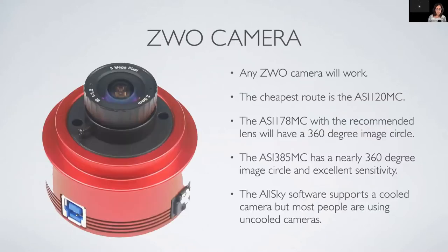You're going to need a ZWO camera. The AllSky software will work with the Raspberry Pi camera, but the ZWO camera will give you a better picture. The absolute cheapest ZWO route is the ASI-120MC, but you can get better pictures with other cameras. The 178MC will give you a complete 360-degree image circle with a different lens. I'm using the 385MC, which has almost a 360-degree image circle and really good sensitivity. The AllSky software even supports cooled cameras, but most people are using uncooled cameras.